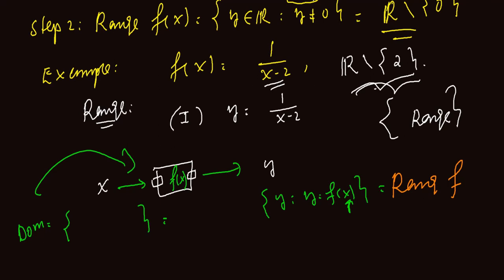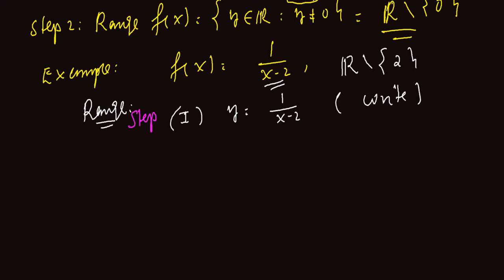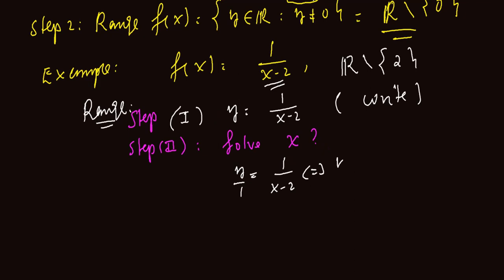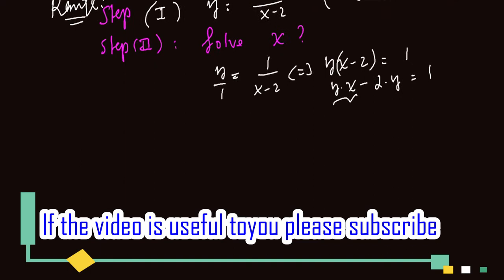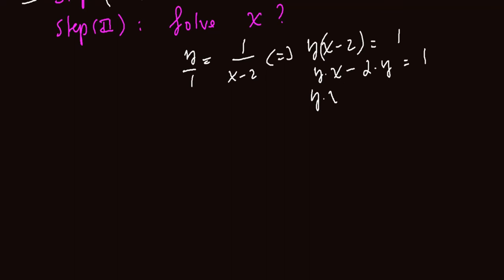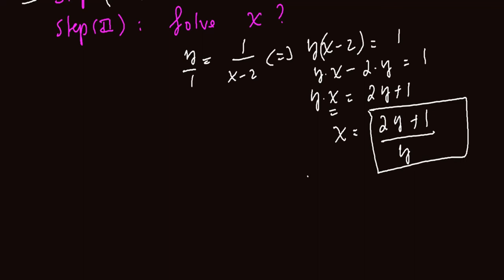Since x equals 2y plus 1 divided by y is a rational expression, y cannot be allowed to be 0. For another example: f of x equal to 3 minus x divided by x plus 4. The domain is clearly all real numbers without the denominator equal to 0. All x's such that x plus 4 equals 0, so the domain is all real numbers without negative 4. For the range, write y equal to 3 minus x divided by x plus 4 and solve for x. After solving for x, we determine which values are not allowed for y.